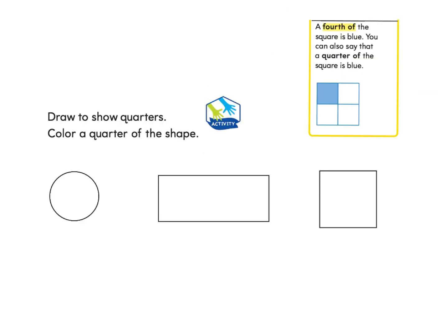Let's take a look at the next page, page 558. It asks us to draw to show quarters. What does the word quarters mean? The vocabulary reminds us that one, two, three, four shares are fourths. When you shade in one, you say a fourth of the square is blue — you can also say a quarter of the square is blue, because there are four shares and one is shaded. So all of these shapes are going to be divided into fourths and we'll color a quarter of the shape.